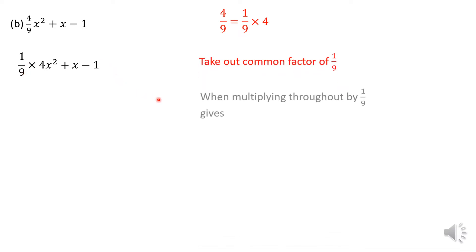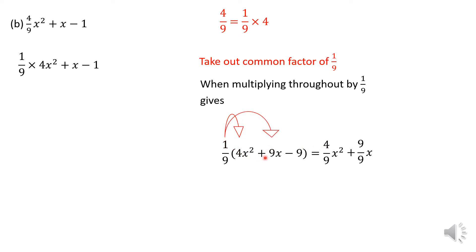So the way I will do that is if I take out 1 over 9 for example and let me just multiply it back. You will see that 1 over 9 times 4 x squared will give me 4 over 9 x squared. And that 1 over 9 times 9 x will give me 9 over 9 x which is effectively just another way of writing this 1 here. And then 1 over 9 times negative 9 over 9 again is going to give me that minus 1 here.